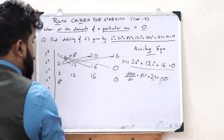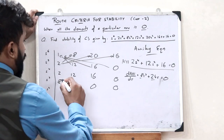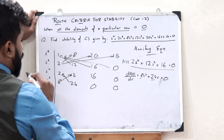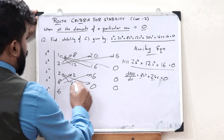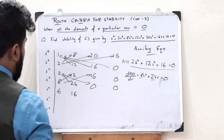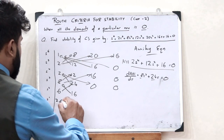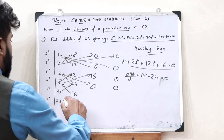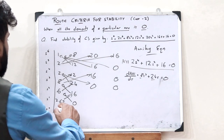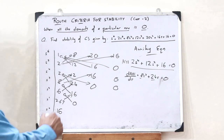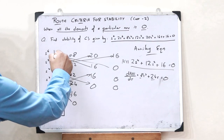We replace the zero row with the coefficients of dA(s)/ds: 8, 24, 0, 0. Then continuing the Routh array: (8×12 − 24×2)/8 = 6, (8×16 − 2×0)/8 = 16. Next: (6×24 − 16×8)/6 ≈ 2.67, and 0. Finally: (2.67×16 − 6×0)/2.67 = 16.